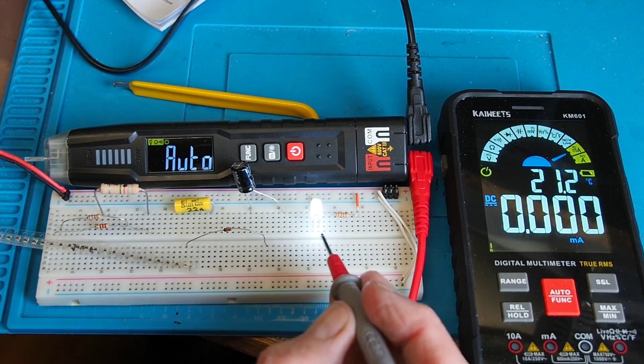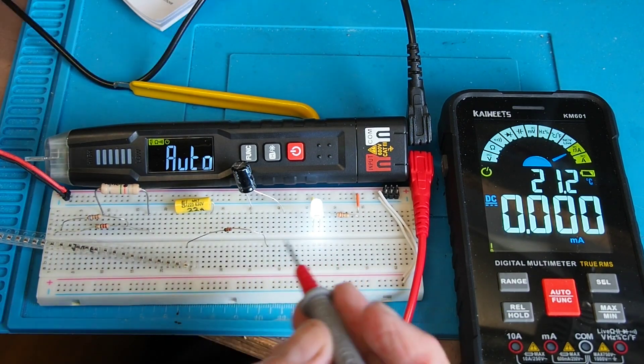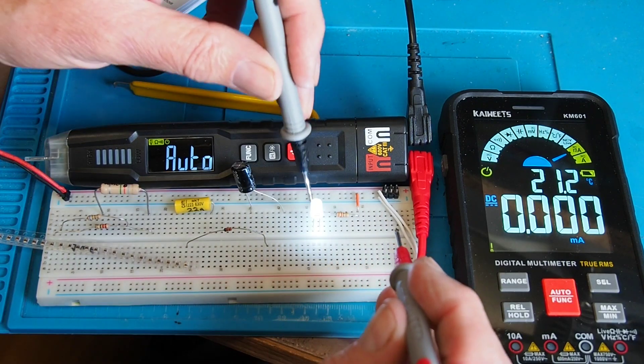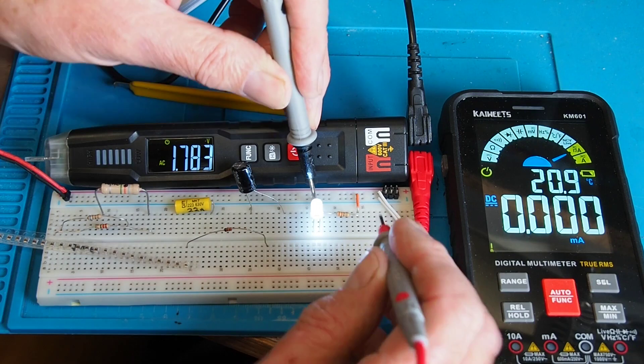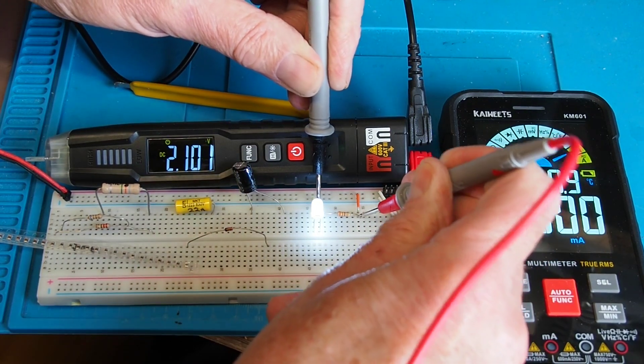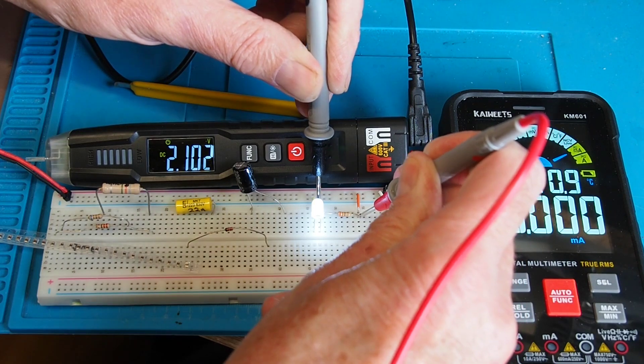That's also quite a handy little test to do anyway. I've got an LED here and I've got a current limiting resistor. Let's first of all just measure the voltage across that current limiting resistor.